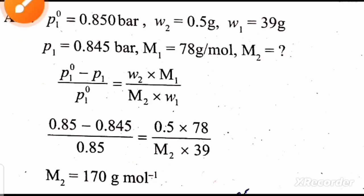This problem involves the colligative property of relative lowering of vapor pressure. The formula to find the molar mass is: (P1⁰ - P1) / P1⁰ = (W2 × M1) / (M2 × W1).